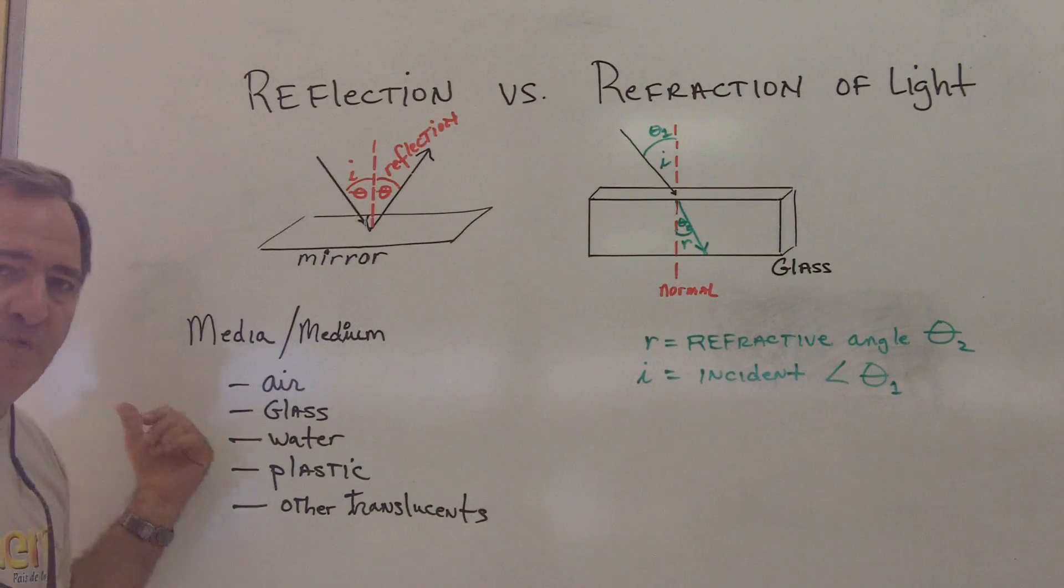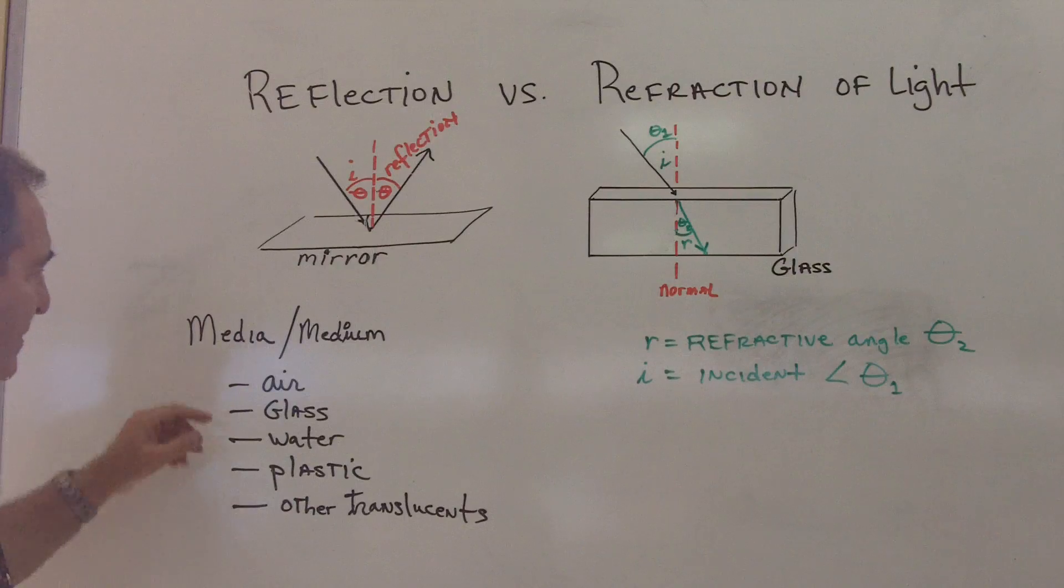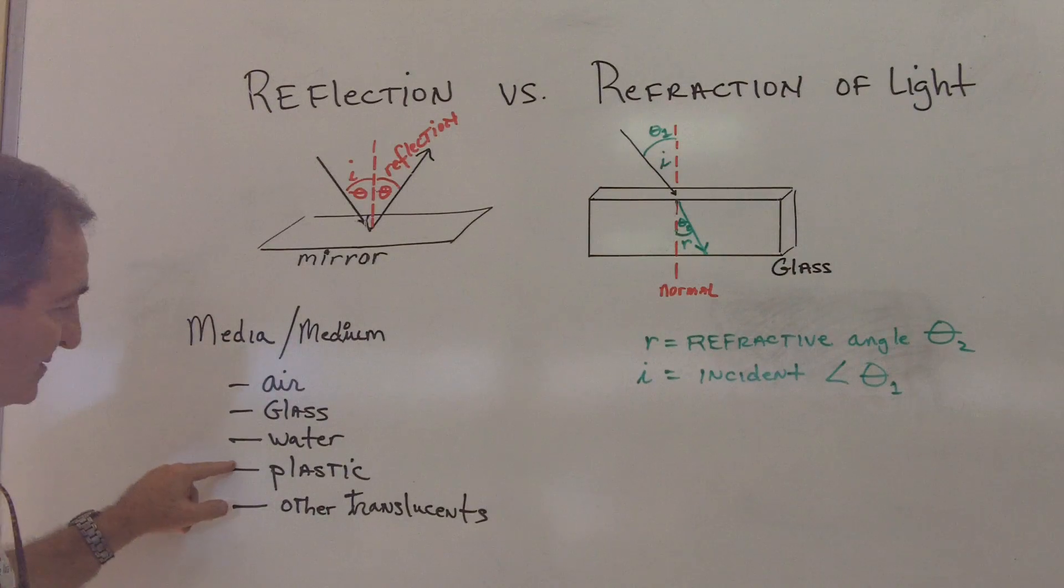Now what is medium? Once again, it's different substances. For instance: air, glass, water, types of plastic like plexiglass, other translucent substances. They can be optic fibers for instance, which are a type of plastic.